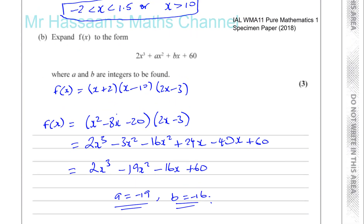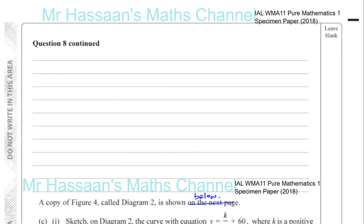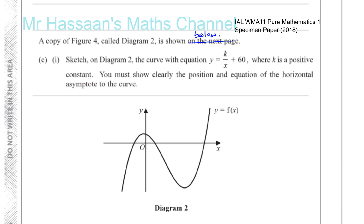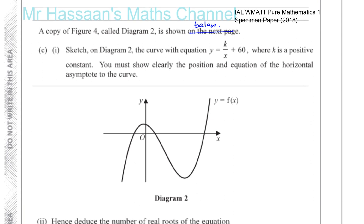Now part c. It says a copy of figure 4, called diagram 2, is shown below. Sketch on diagram 2 the curve with equation y equals k over x plus 60, where k is a positive constant, clearly showing the position and equation of the horizontal asymptote. So y equals k over x plus 60 is of the form 1 over x — that's the reciprocal curve, the parent function.